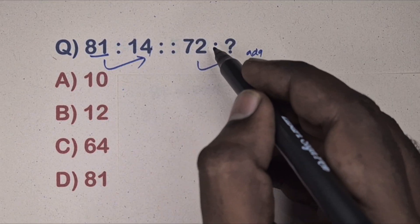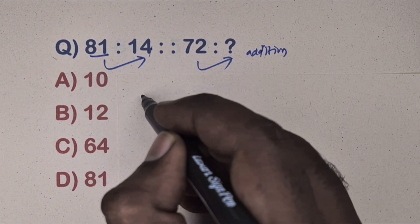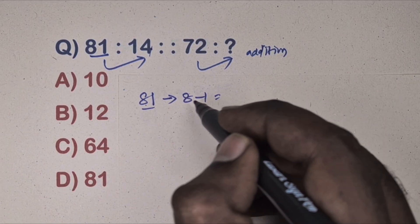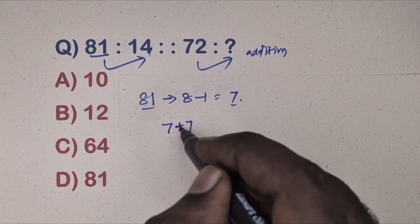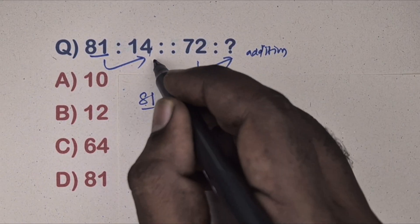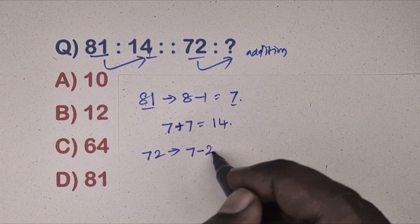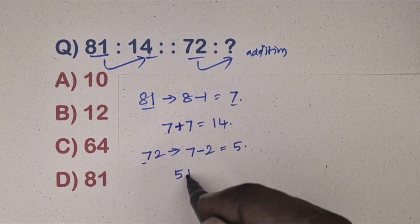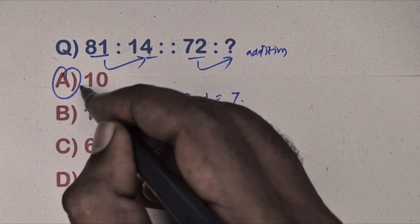Next question: 81 is related to 14, and 72 is related to which number? This is an addition method. Take 81 — subtract the digits: 8 minus 1 equals 7, then add 7 plus 7 equals 14, and 14 is there. Same way, take 72 — subtract the digits: 7 minus 2 equals 5, then add 5 plus 5 equals 10. So 10 is the correct answer.